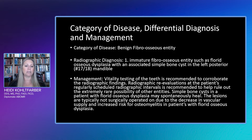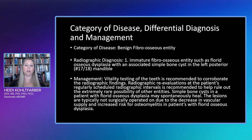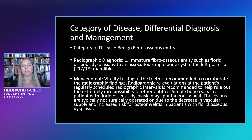Not only do we have immature florid osseous dysplasia in this particular case, but we have an associated simple bone cyst in the number 17 and 18 region. That's why that particular area looked more hypodense and had that nice scalloped border. There are a set of lesions I like to call the 'buddy lesions' because they like to be associated with other entities, and our simple bone cysts like to pop up within our fibro osseous entities — very common to see that.